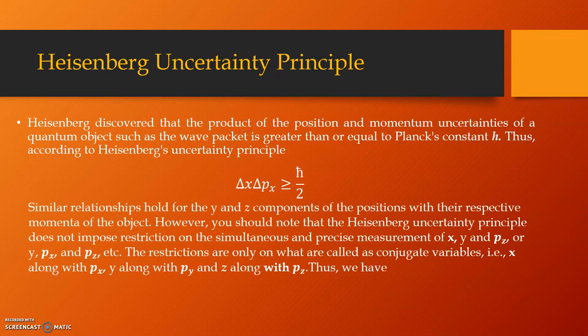Similar relationships hold for the y and z components of the positions with their respective momenta of the object. However, you should note that the Heisenberg uncertainty principle does not impose any restriction on the simultaneous and precise measurement of x with pz or y and px or y and pz. The restrictions are only on what are called as conjugate variables that is x with px, y with py and z with pz.